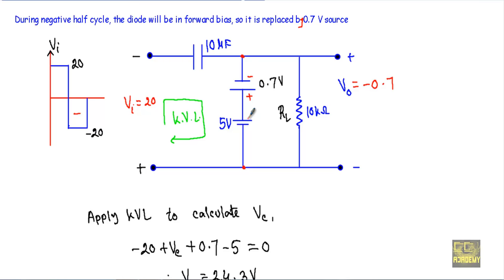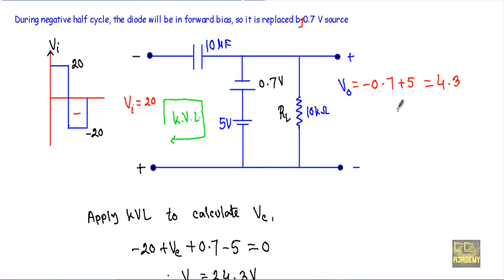So when the input voltage is equal to minus 20V, our output voltage will be equal to 4.3V. During forward bias of the diode, our capacitor of 10 microfarad will get charged. The charging current flows such that the left terminal of the capacitor is negative and the right terminal is positive, storing a voltage Vc. To calculate Vc I will apply KVL in this loop, yielding: minus 20 plus Vc plus 0.7 minus 5 equals 0, from which the capacitor voltage Vc equals 24.3V.